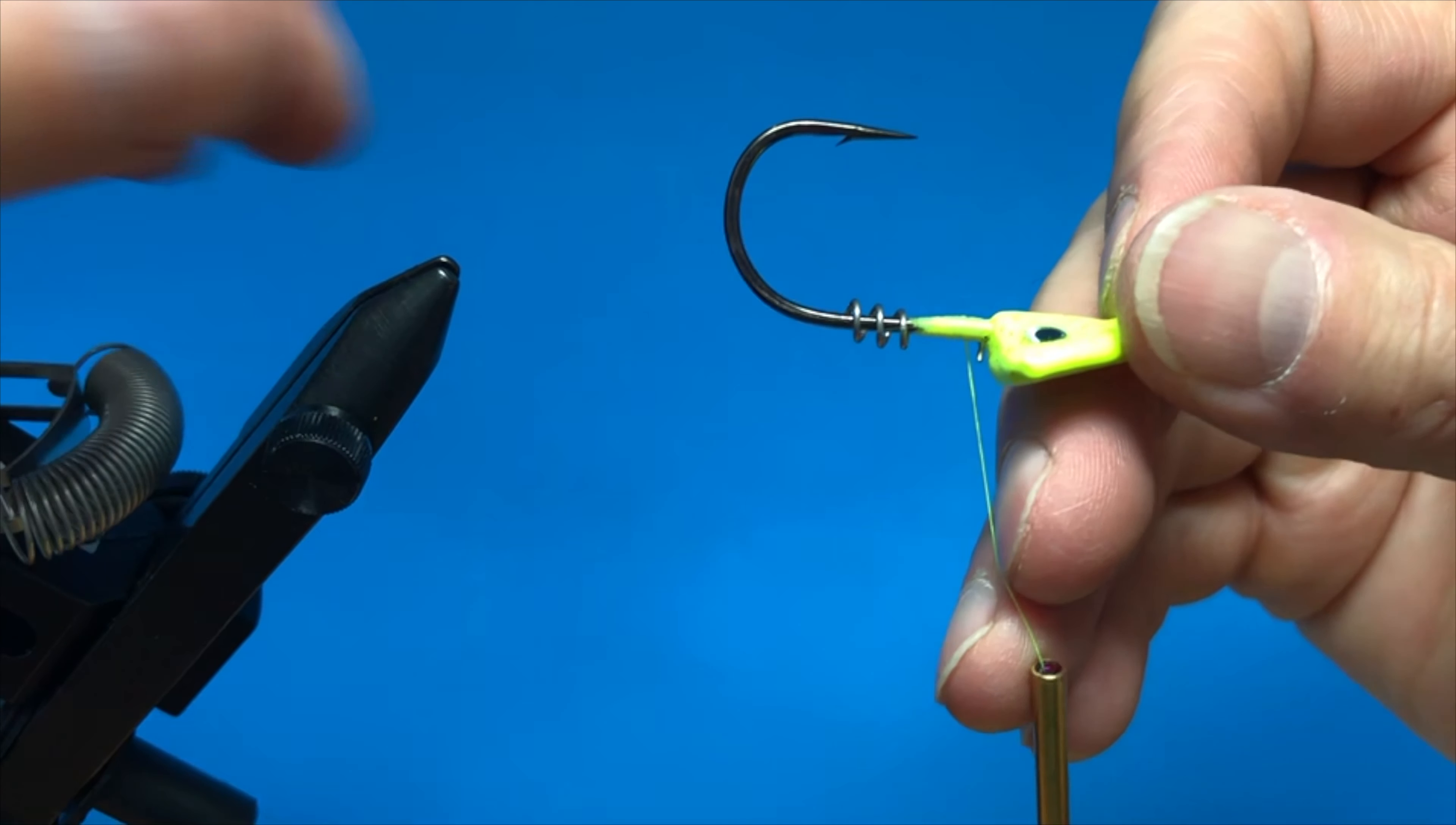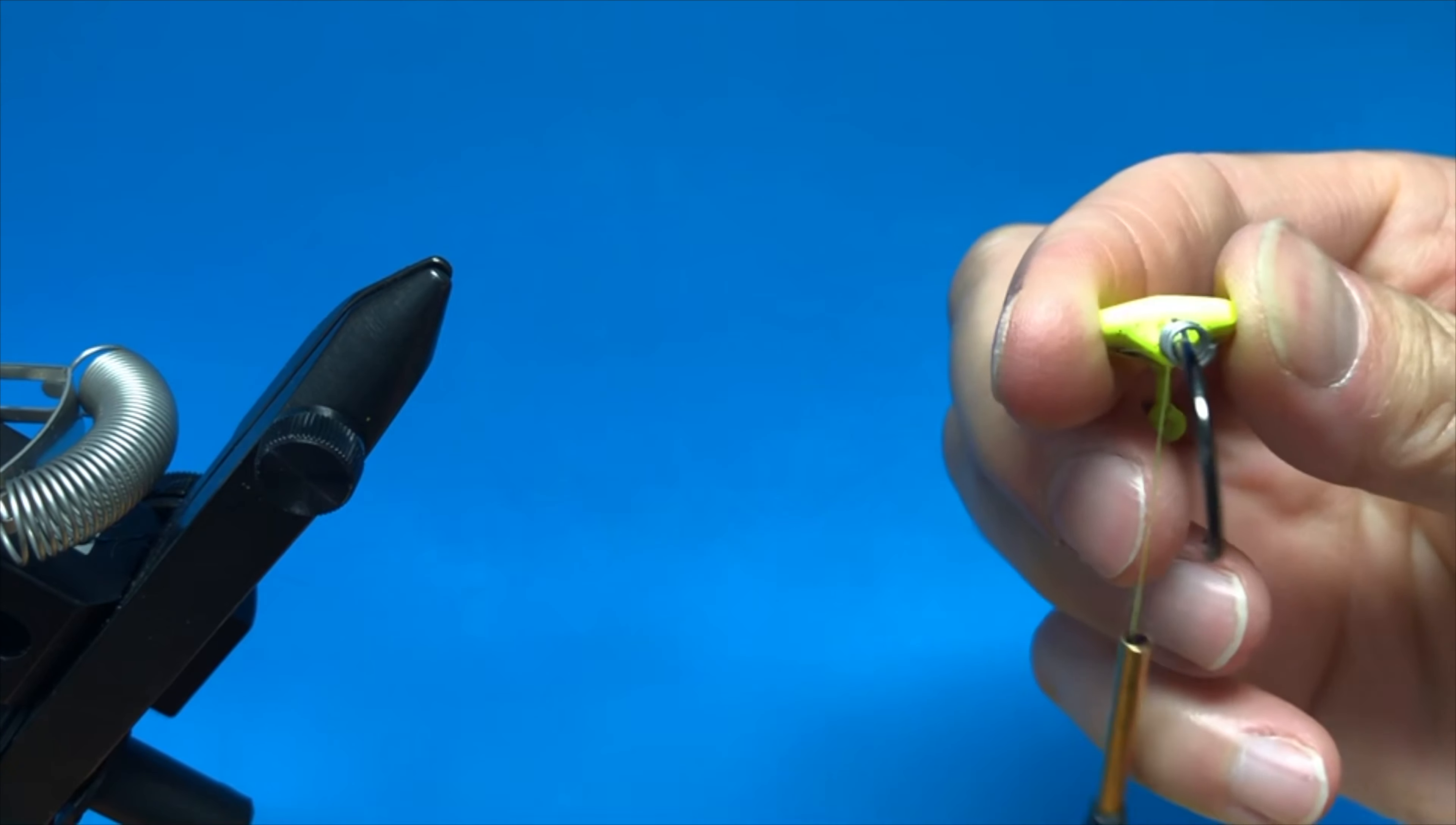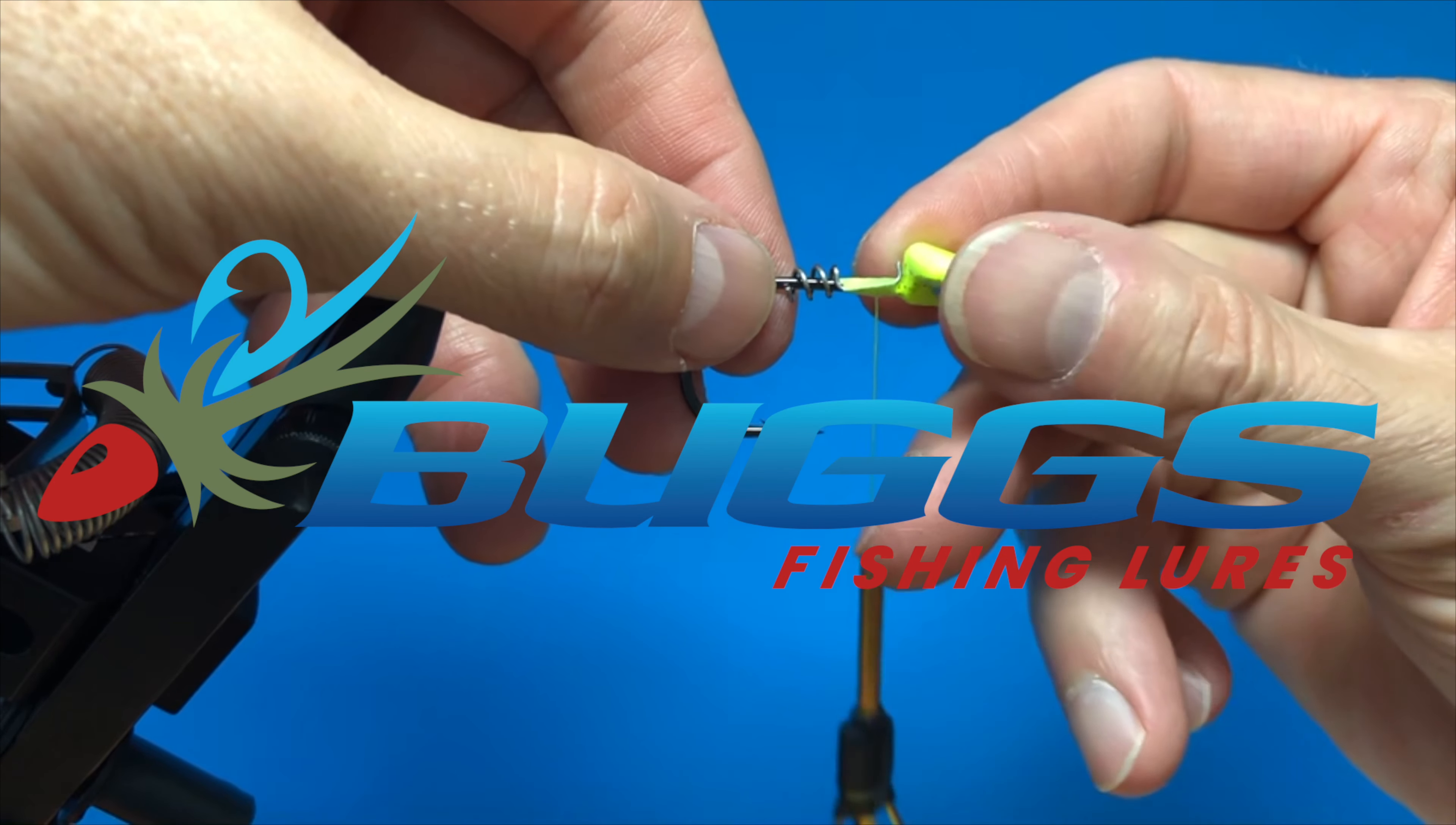That is the Bugs Custom Screw Lock quick tutorial. It's very useful and available in the tie your own section of the store. When you're tying a jig and want to add a soft plastic, it's a super simple, easy way to do that. It's a custom part only available through us and I hope you will try some. Catch you later.